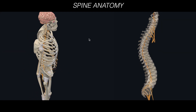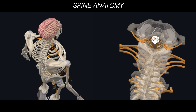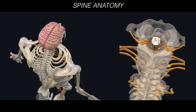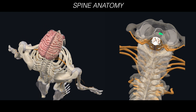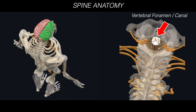I'm going to rotate the model and look from above, so you can see how the spinal cord is located in the center of the entire vertebral column. This opening is called the vertebral foramen or vertebral canal.